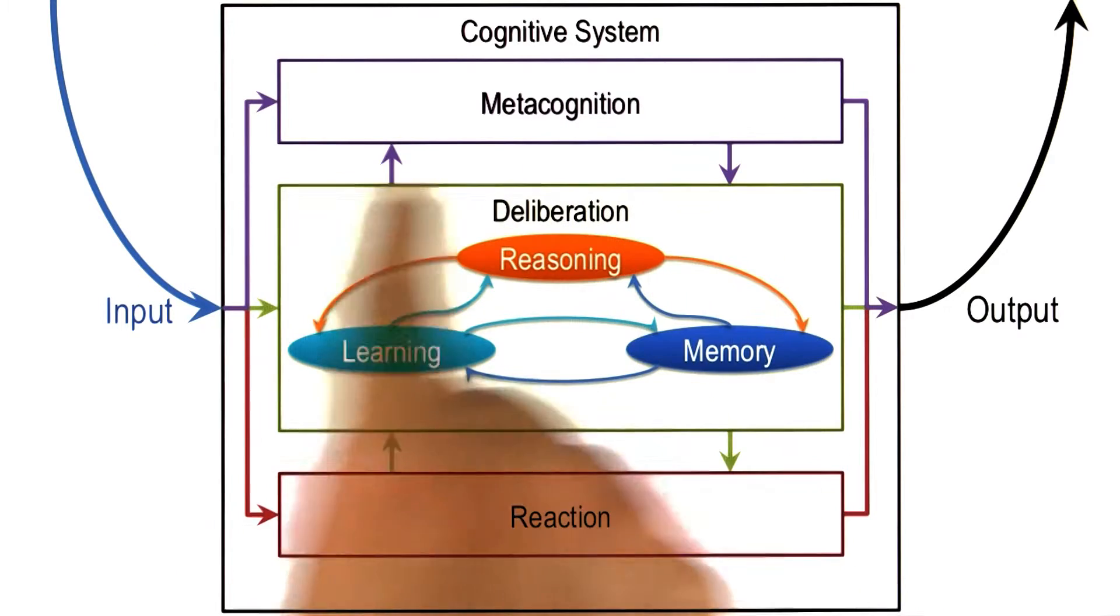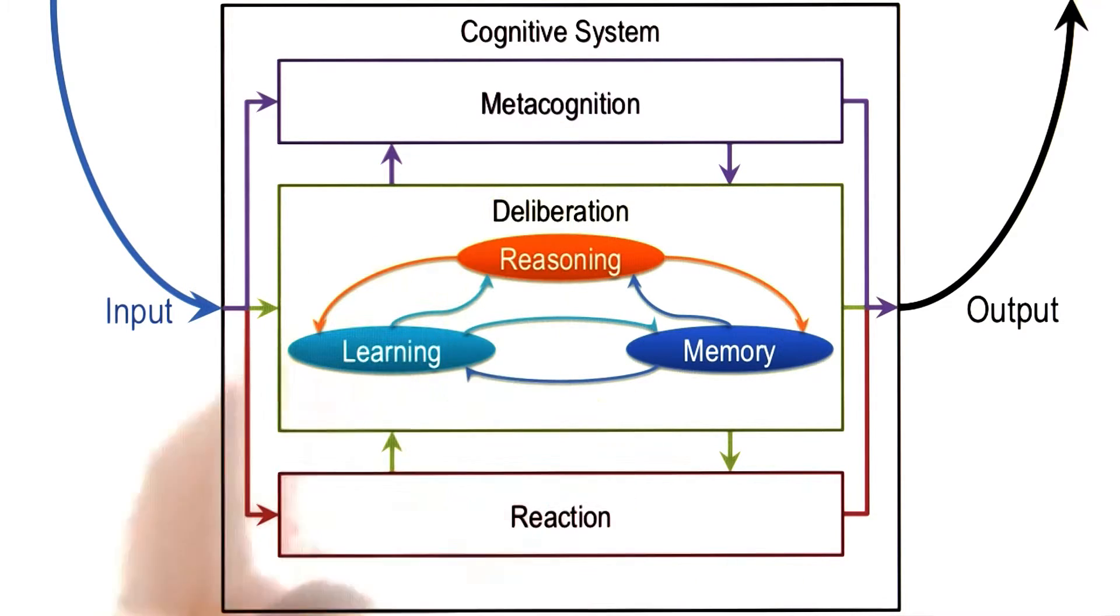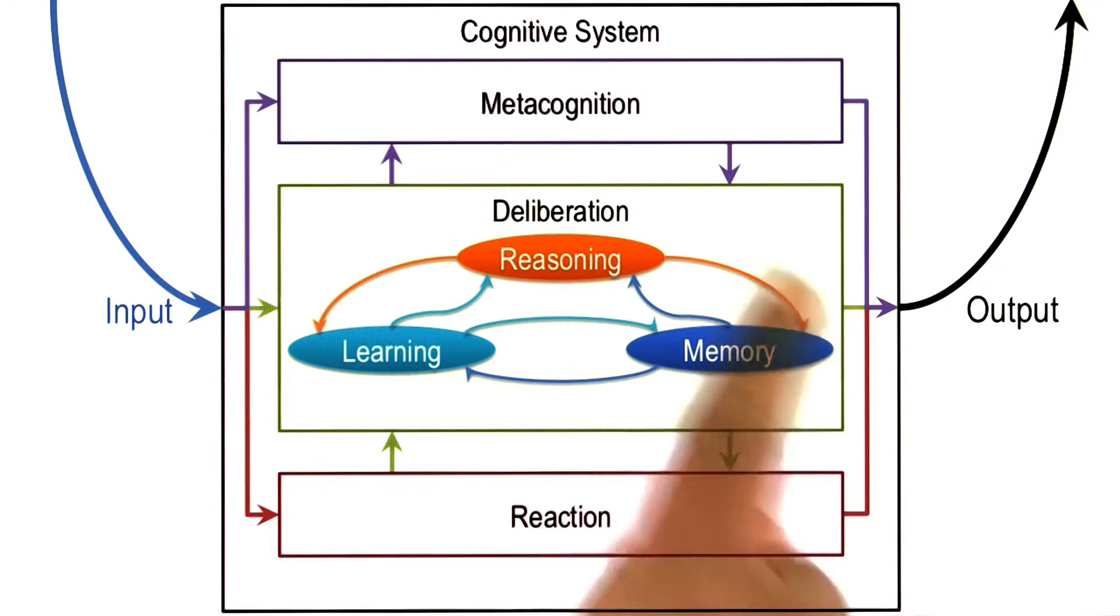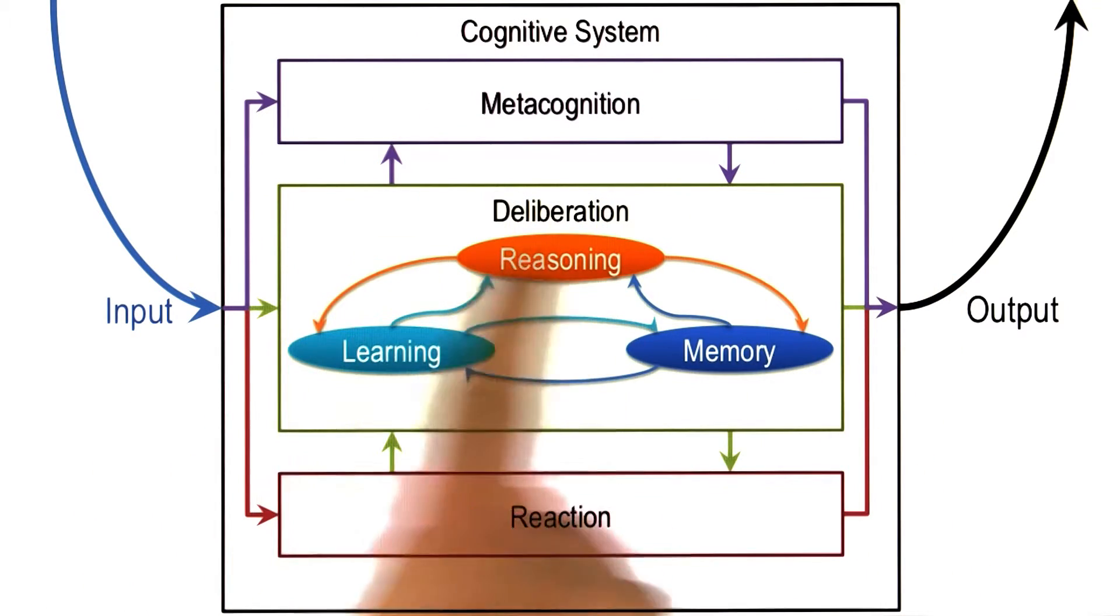So instead of thinking of deliberation and metacognition as two separate independent boxes, a better way might be to think in terms of boxes that partially overlap as a meta space and as a deliberation space.